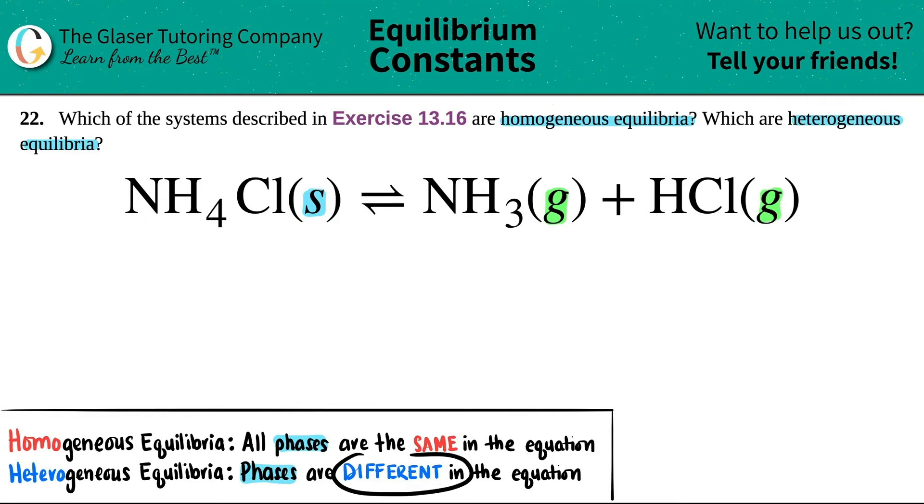Since I see some difference, right, the phases are different, this would be classified as a heterogeneous equilibrium. Sometimes looking at these words, they start looking kind of wrong if you keep doing them over and over again. But this is a heterogeneous equilibrium.